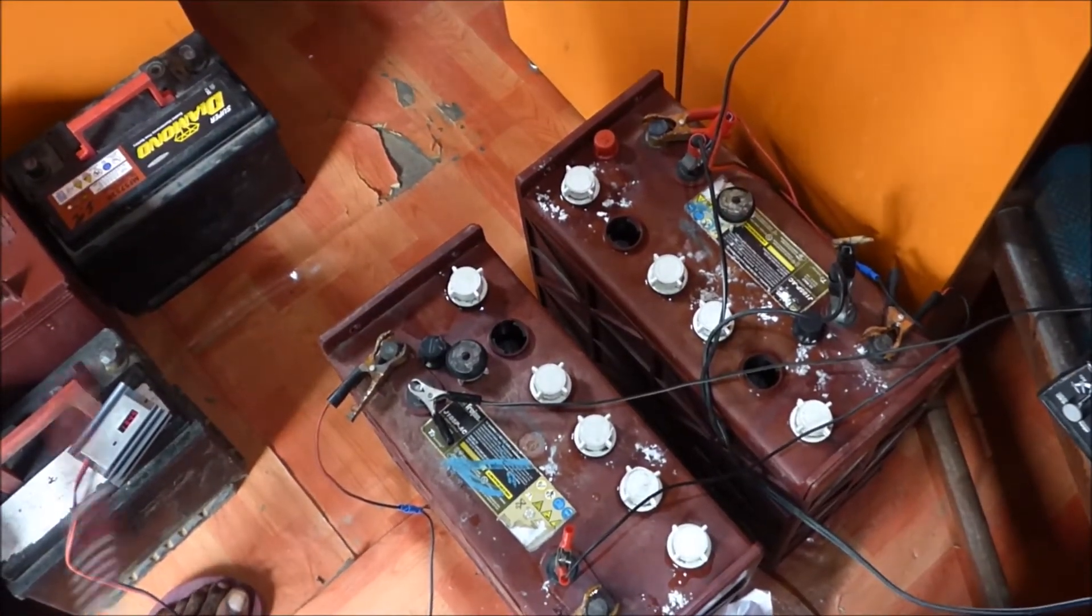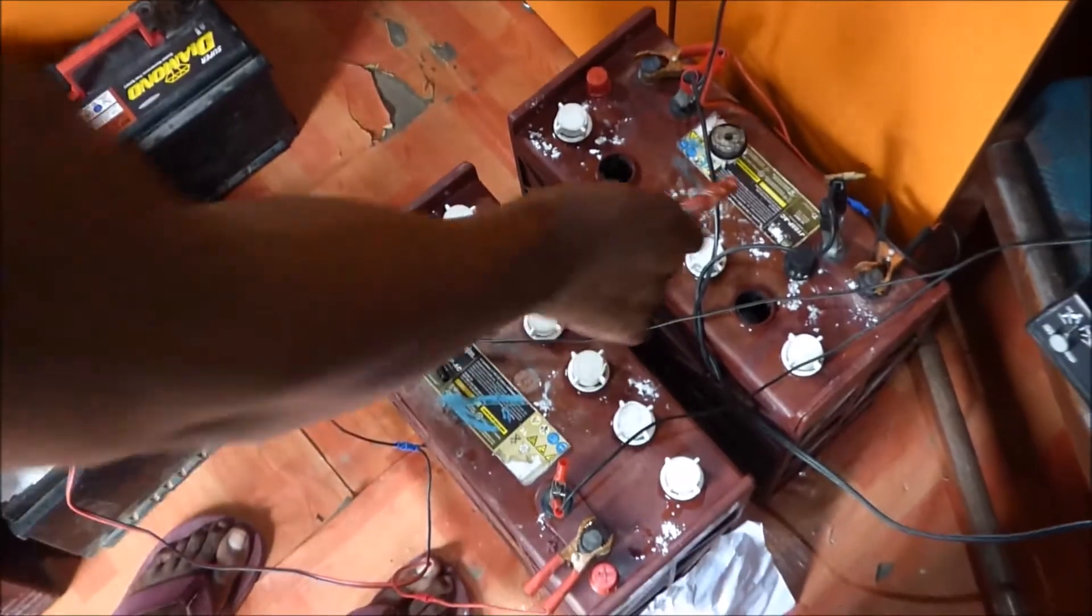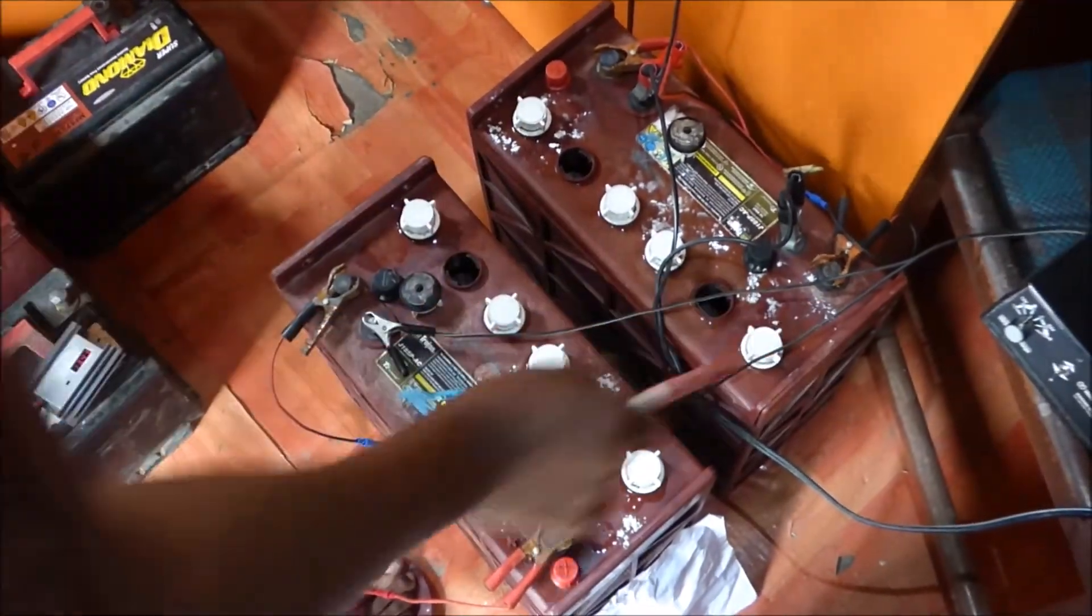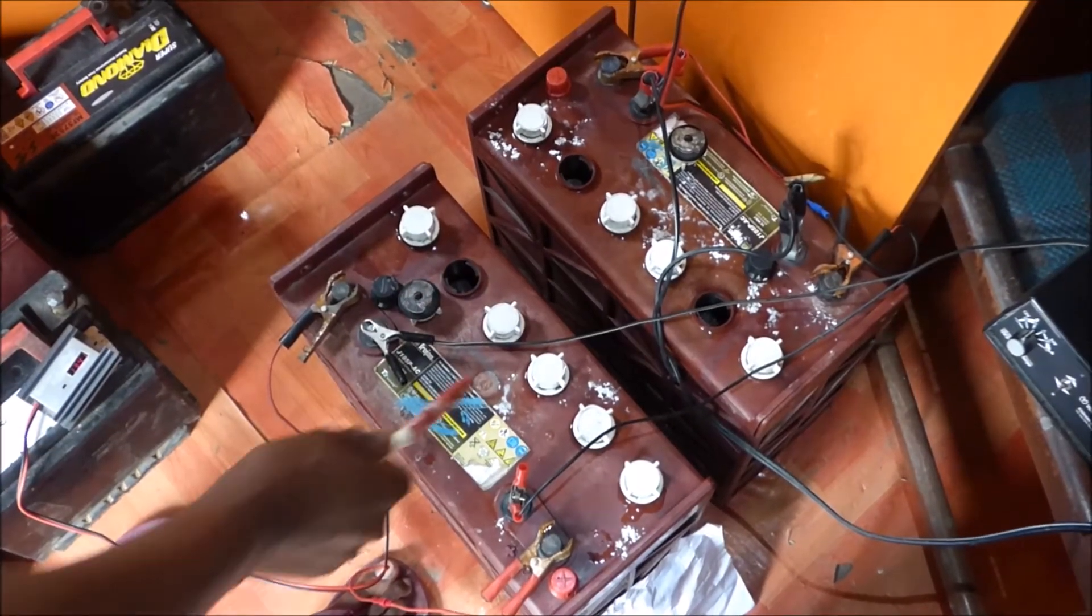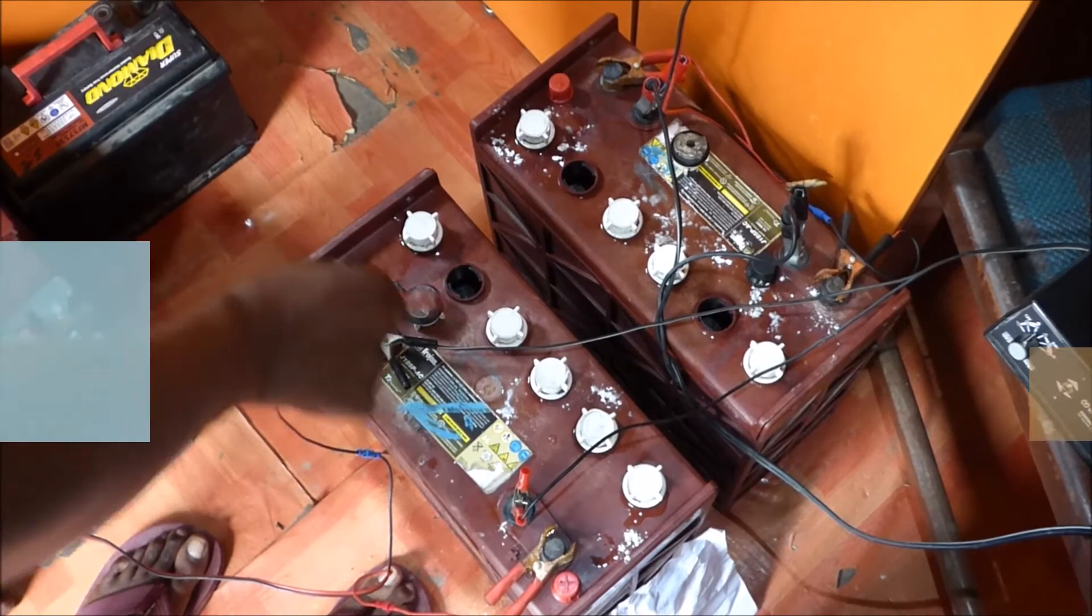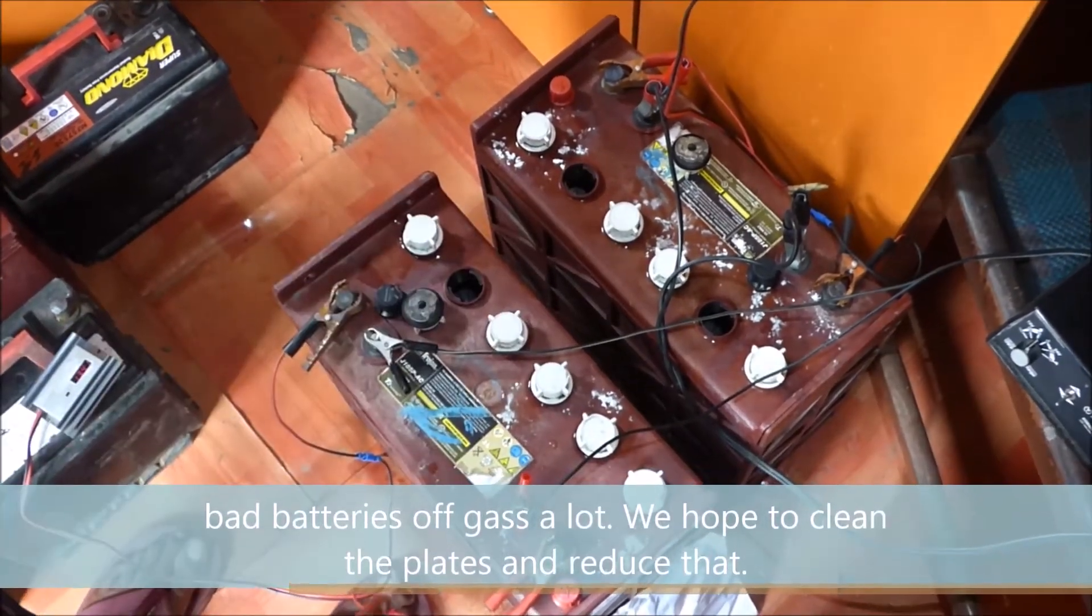We'll keep you posted. This is another experiment for us to try to recover another set of batteries. The white stuff you see is baking soda. As it charges, it's off-gassing a lot and it's coming out through the caps and depositing on top of the battery. I'm putting baking soda to neutralize it.